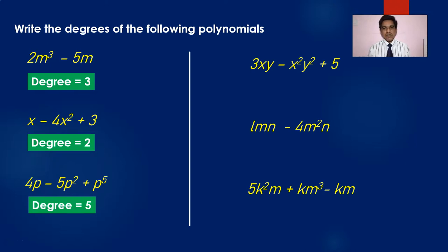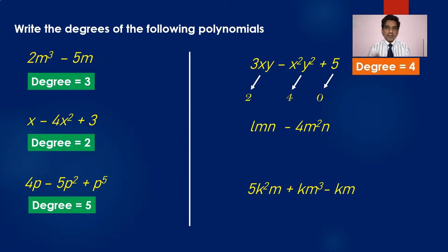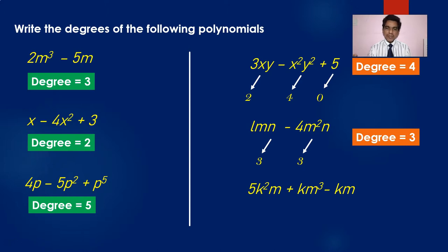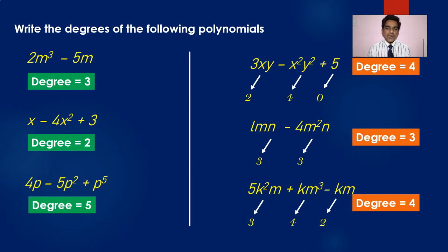For more than one variable: 3xy minus x²y² plus y — the first term 3xy has degree 2, the second x²y² has degree 4, and the last constant y has degree 1. The highest is 4, so the degree is 4. For lmn minus 4m²n — lmn has degree 3 (1+1+1) and 4m²n has degree 3 (2+1), so degree is 3. For 5k²m plus km³ minus km — first term degree 3 (2+1), second term degree 4 (1+3), third term degree 2 (1+1). Highest is 4, so degree of the polynomial is 4.